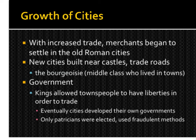Growth of cities: with more trade occurring, merchants needed access to more people. They started settling in old Roman cities, and some built new cities outside of castles along trade roads. The people who lived in these new cities are known as the bourgeoisie, meaning middle-class people who lived in towns. Kings had to give merchants more freedoms so they could trade, and eventually cities developed their own city governments. Patricians — the upper class — were elected, usually through fraudulent means.